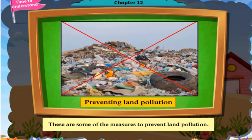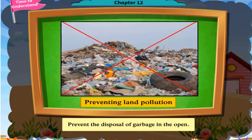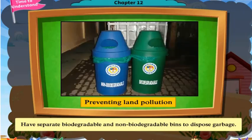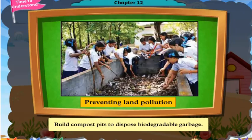These are some of the measures to prevent land pollution. Prevent the disposal of garbage in the open. Have separate biodegradable and non-biodegradable bins to dispose of garbage. Build compost pits to dispose of biodegradable garbage.